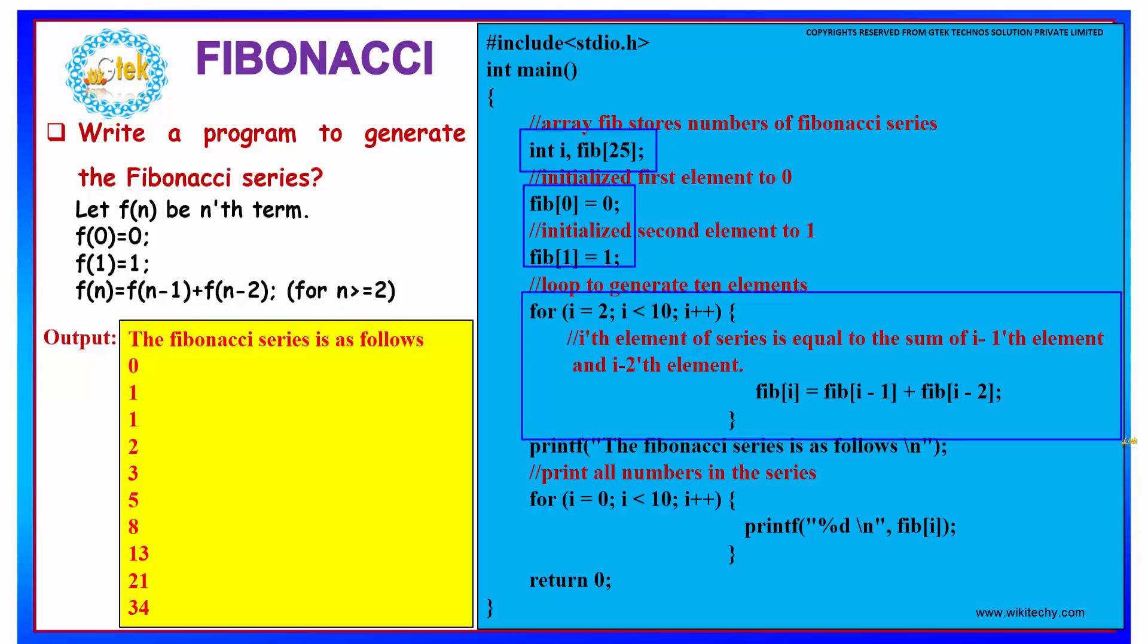We are writing a for loop, and for each value of i which is greater than or equal to 2, we are going to apply the formula: the Fibonacci value of the ith term is nothing but the sum of the terms before it, that is i-1 and i-2. That will be stored in the Fibonacci array, which is of type int.